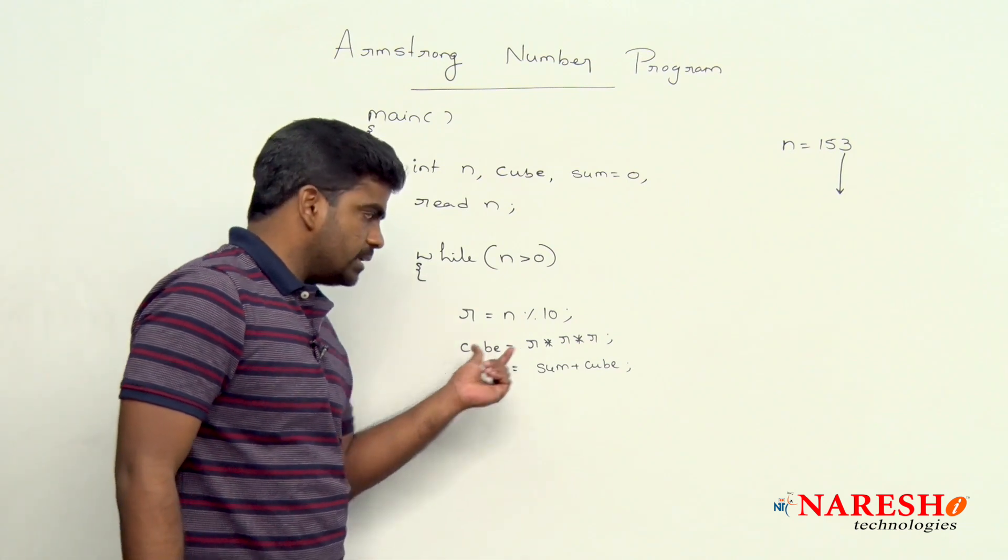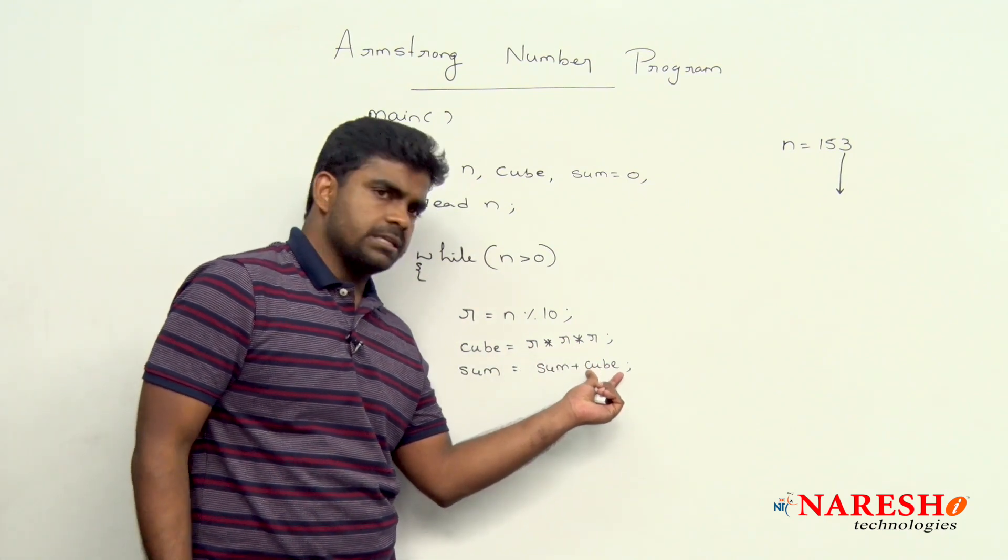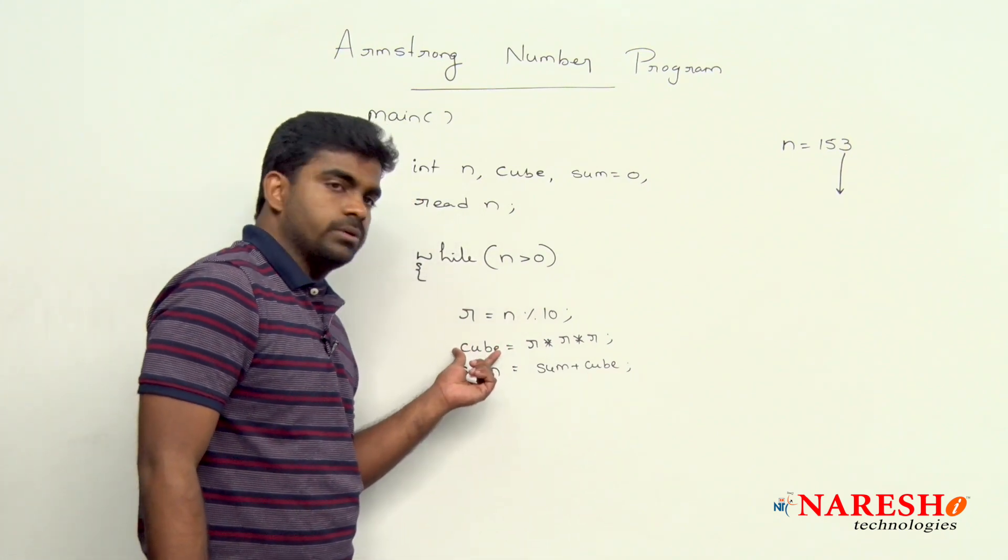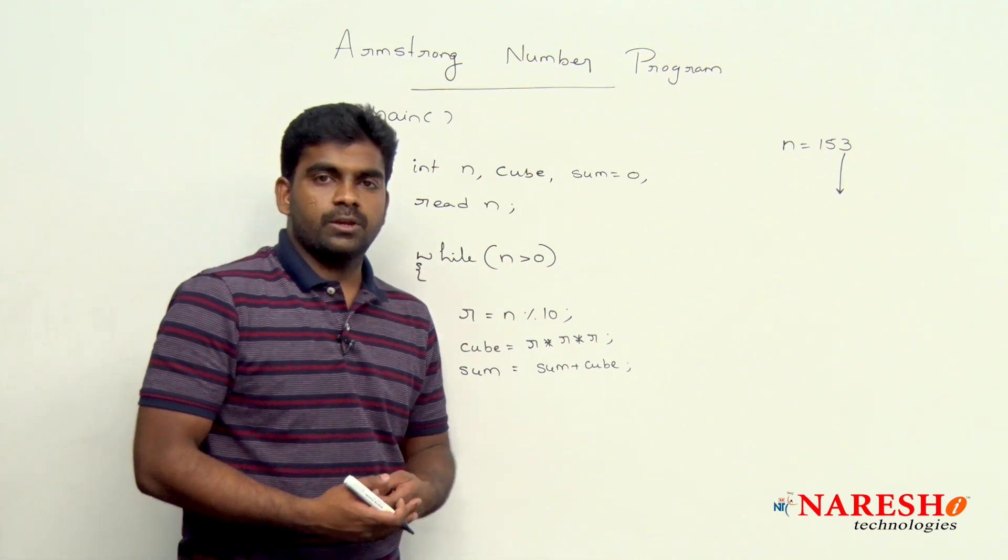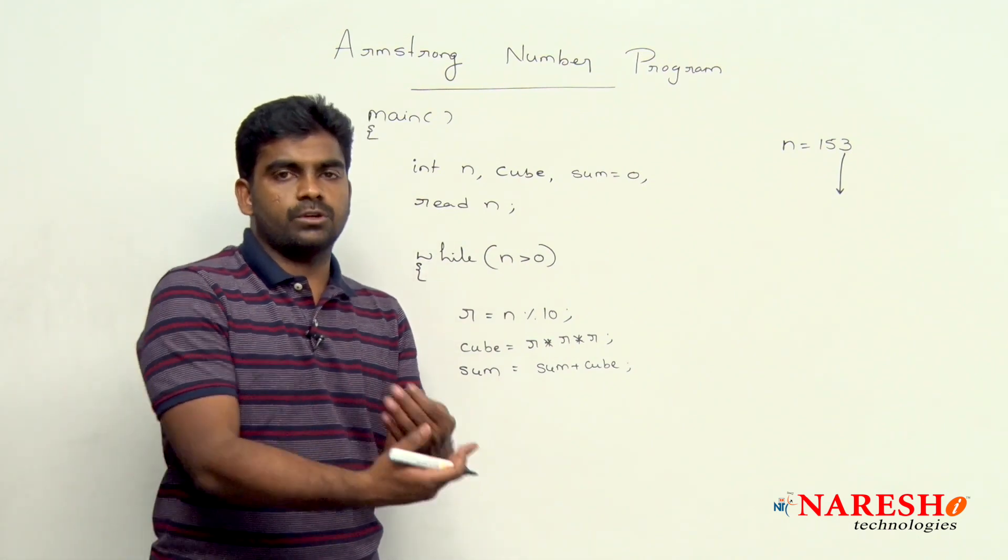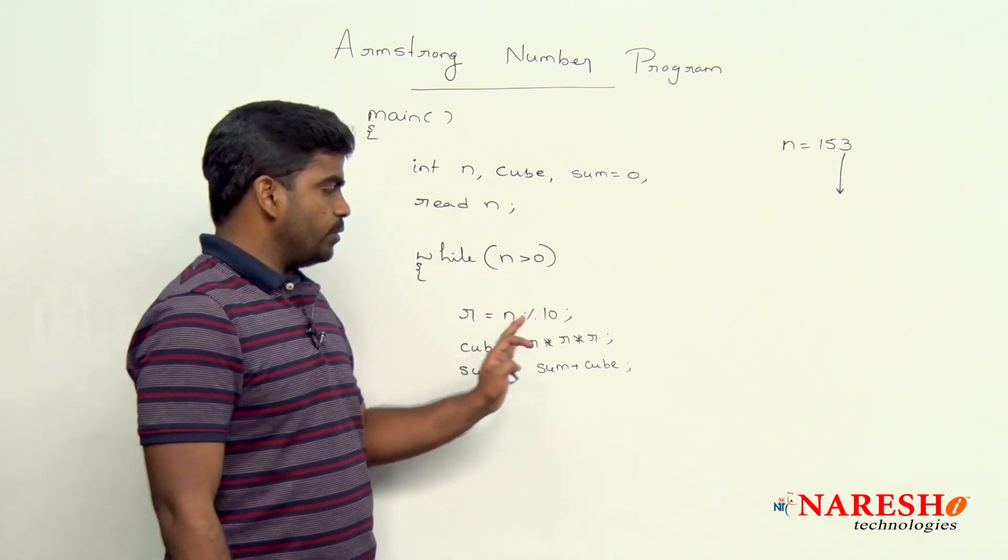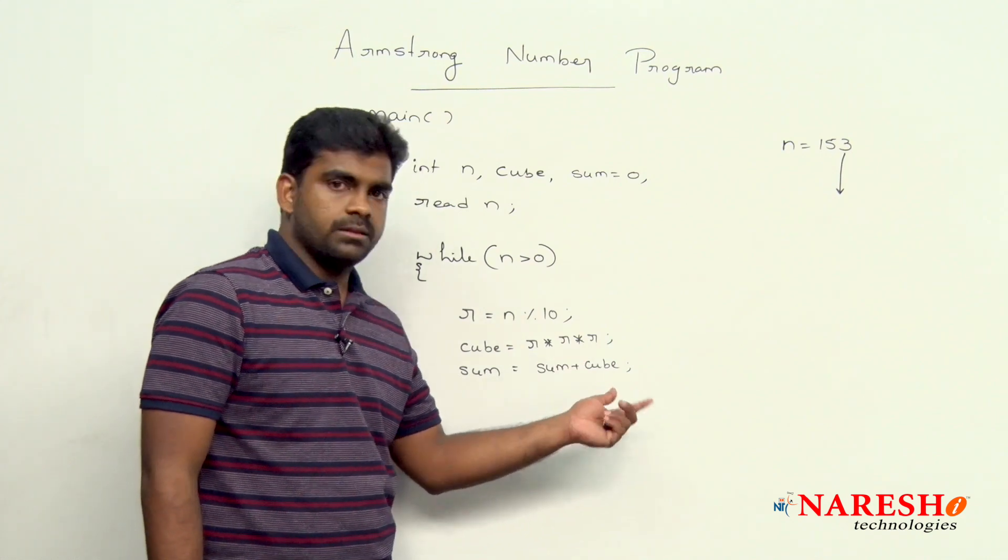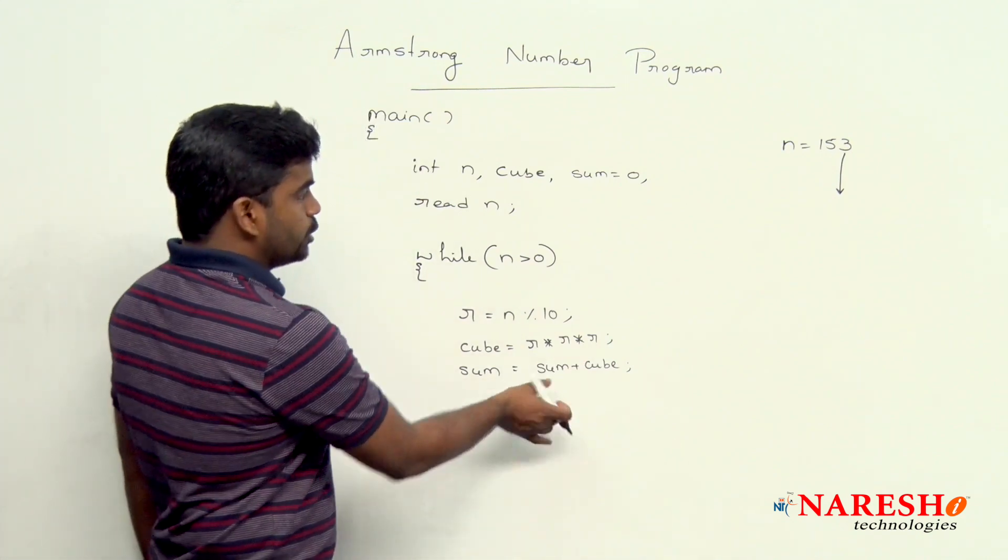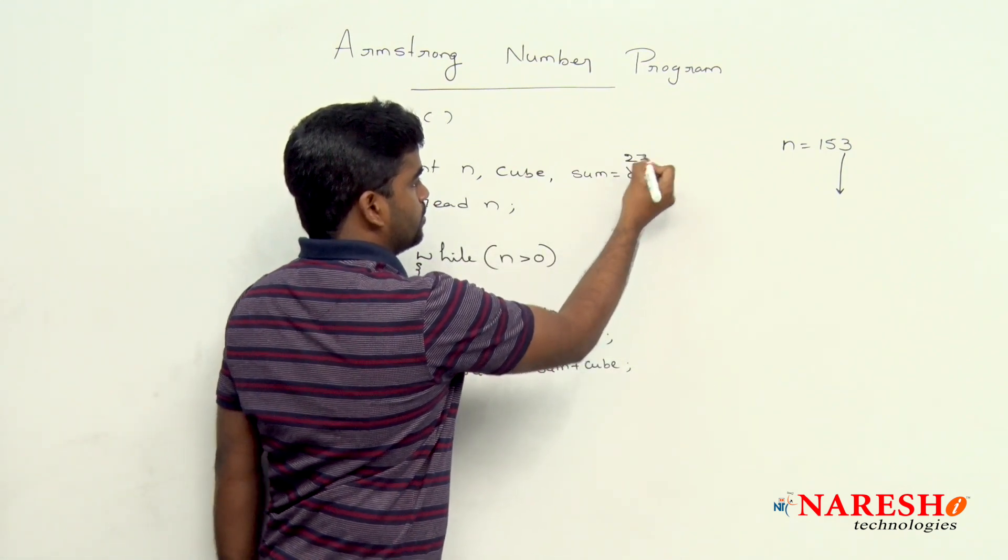Sir, cannot you write r multiplied with r multiplied with r directly here? Yes, you can, no problem. Then no need to declare that cube variable again. You can save the memory. That is completely depends on your logical skills. Here it is I am explaining more clearly. If you want to remove some of the variables and submit the expression directly, that is your wish. The cube value, 3 cube value is 27, that will go and store into sum.